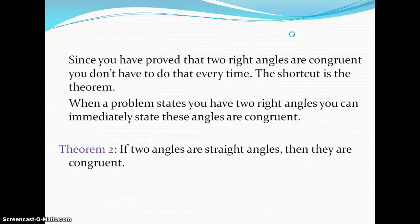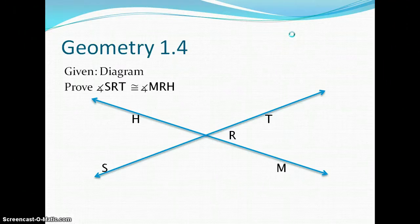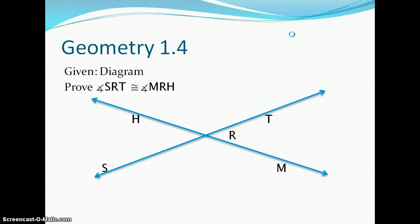Theorem number two. If two angles are straight angles, then they are congruent. We've got a diagram here. The only thing that we're given is the diagram. No statements, even. We want to prove that angle SRT is congruent to angle MRH. Let's take a look. I've redrawn the diagram up in the corner.